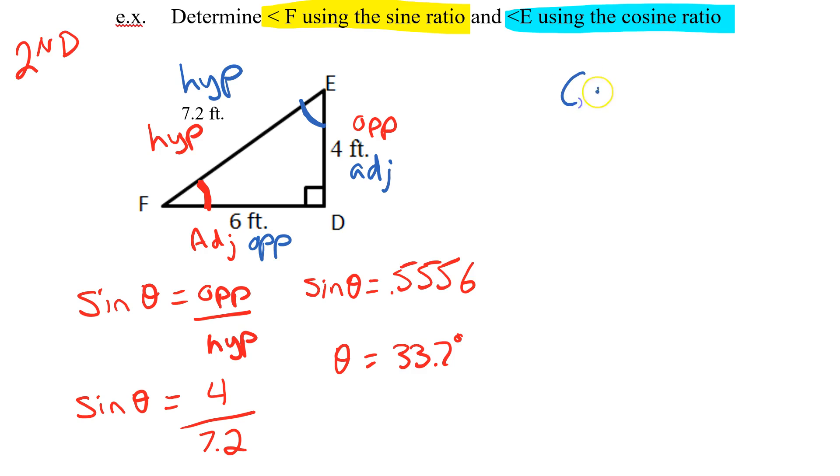So cos of the angle is adjacent divided by hypotenuse. Cos of the angle, my adjacent is 4, my hypotenuse is 7.2.